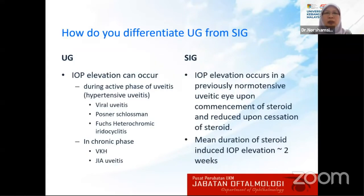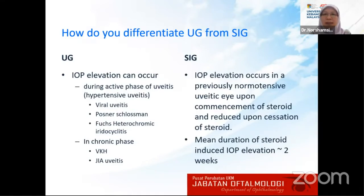How do you differentiate these two? Uveitic glaucoma occurs when IOP elevation occurs due to either an active phase of uveitis, or what we call hypertensive uveitis in cases like viral uveitis, Posner-Schlossman syndrome, Fuchs heterochromic iridocyclitis, and also in chronic phases of VKH and JIA uveitis. Steroid-induced glaucoma commonly occurs from IOP elevation in a previously normal uveitic eye upon commencement of steroids — and when you reduce the steroid, IOP can come down. The mean duration of steroid-induced IOP elevation is normally two weeks.